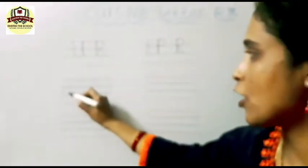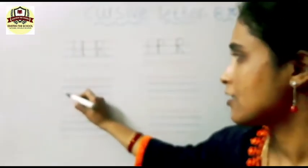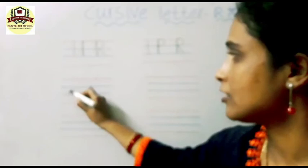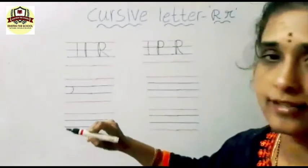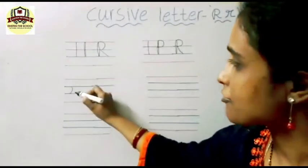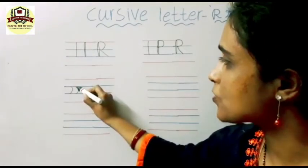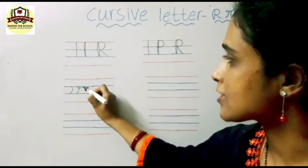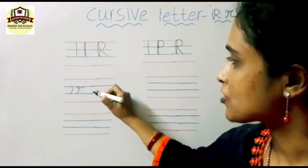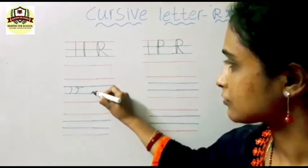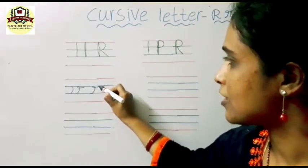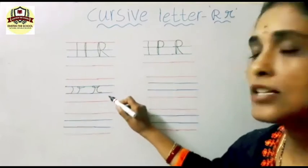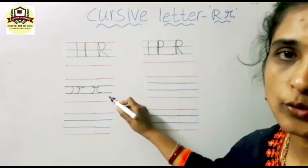Now see here small r. First write reverse C starting from the third line. Like this — after writing like this, make a small turn over there and write the standing line. Now write the letter C. This is the small cursive R.